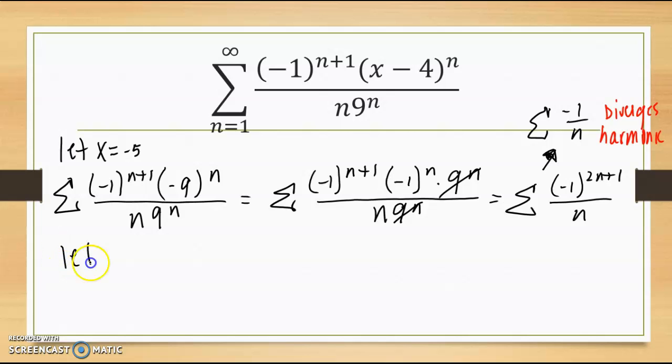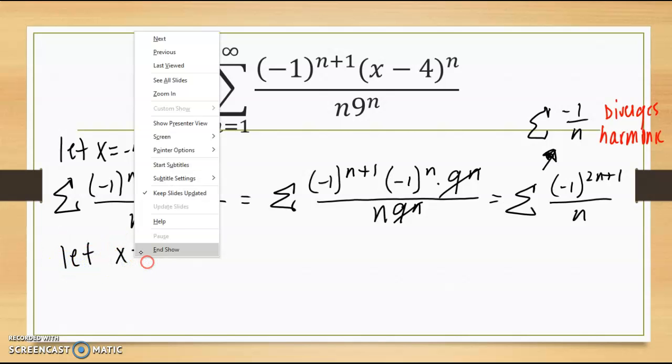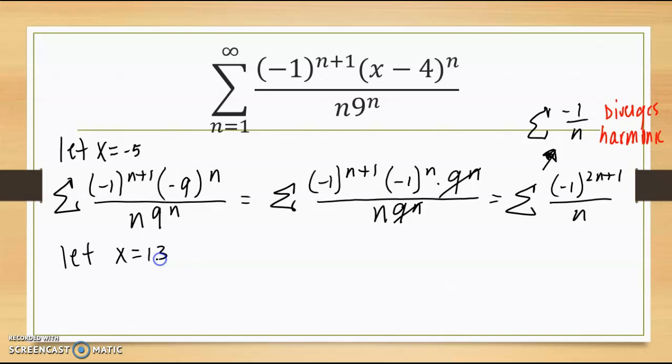Now let x equal positive 13. So I get negative 1 to the n plus 1. 13 minus 4, that gives me 9 to the n, all over n times 9 to the n.